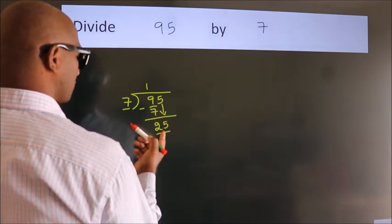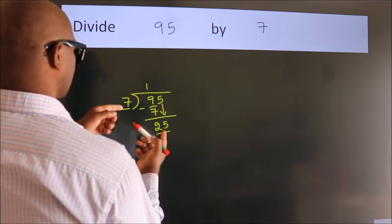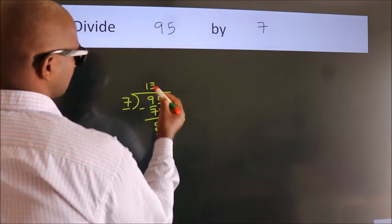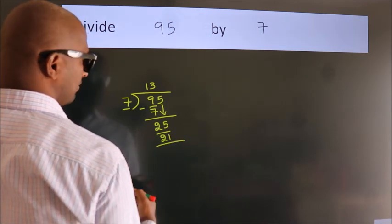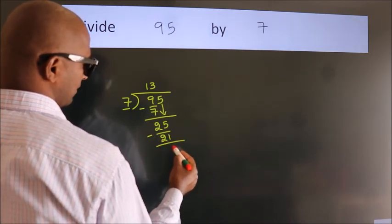A number close to 25 in 7 table is 7 threes 21. Now, we should subtract. We get 4.